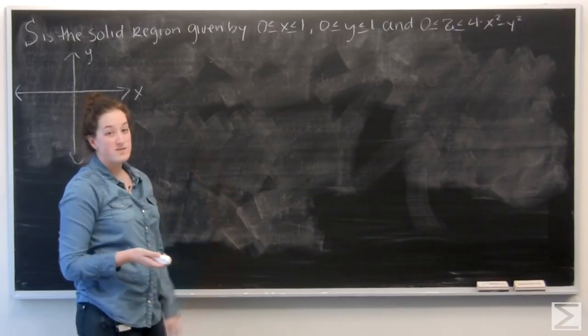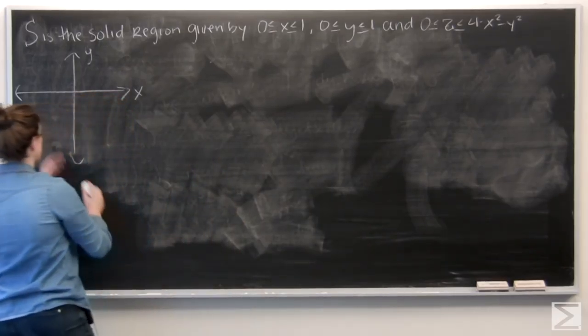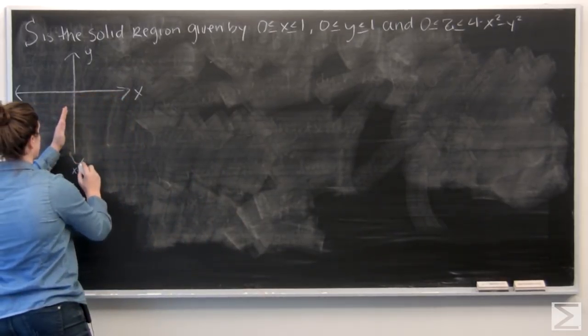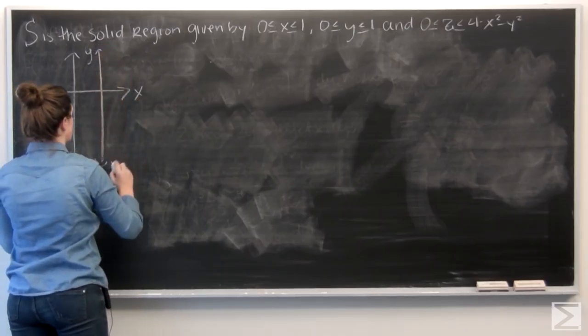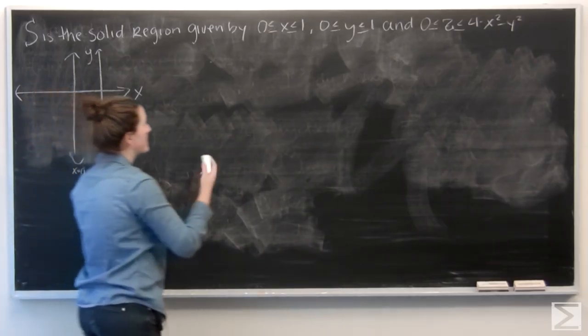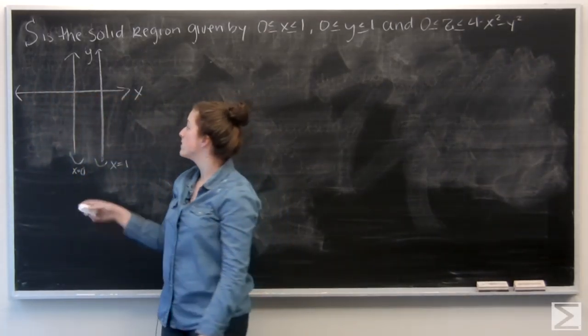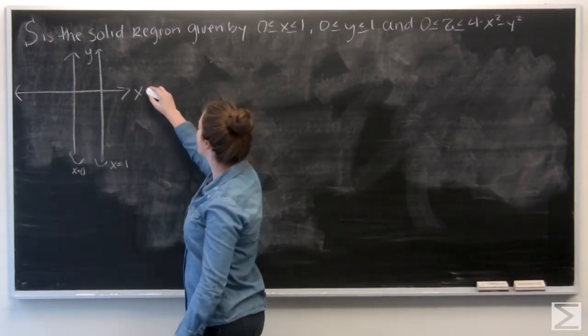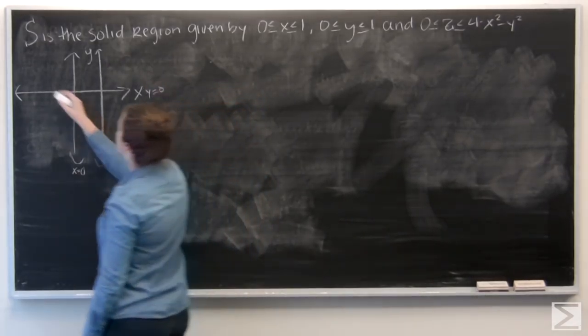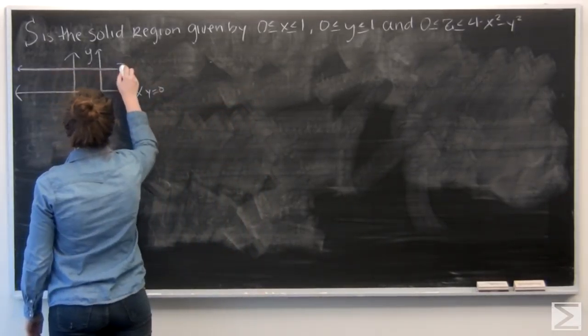So I'm looking at x between 0 and 1. So x equals 0 and x equals 1. And then I want to do the same for y. So y equals 0 and y equals 1.